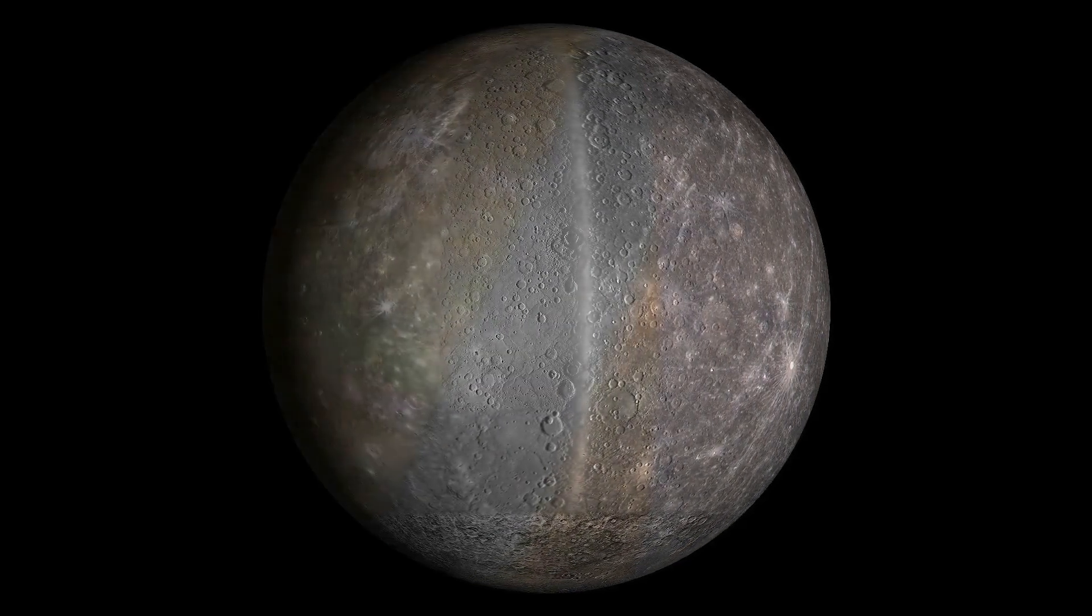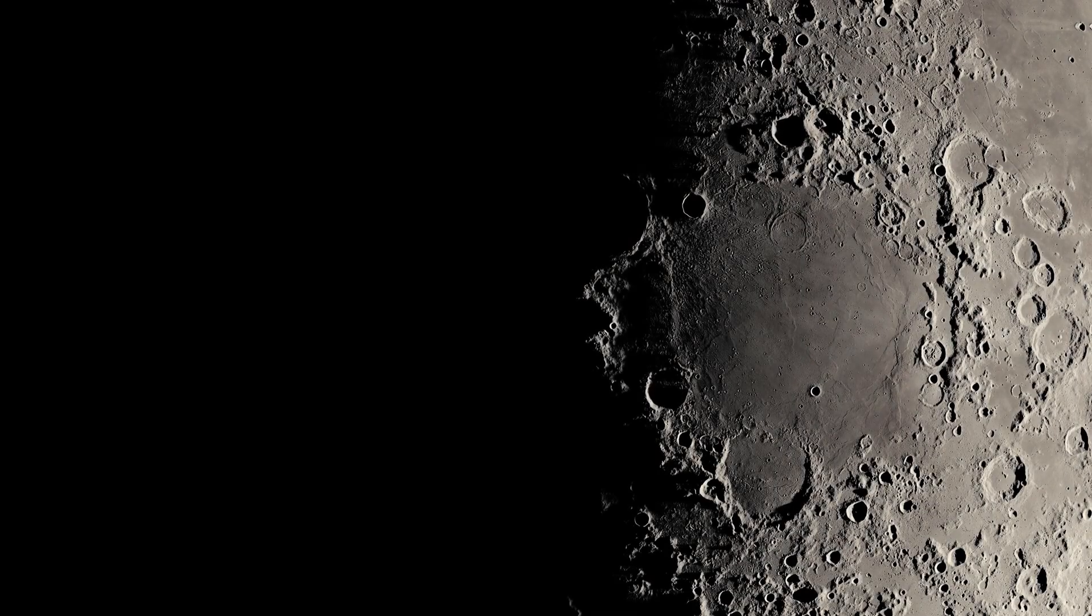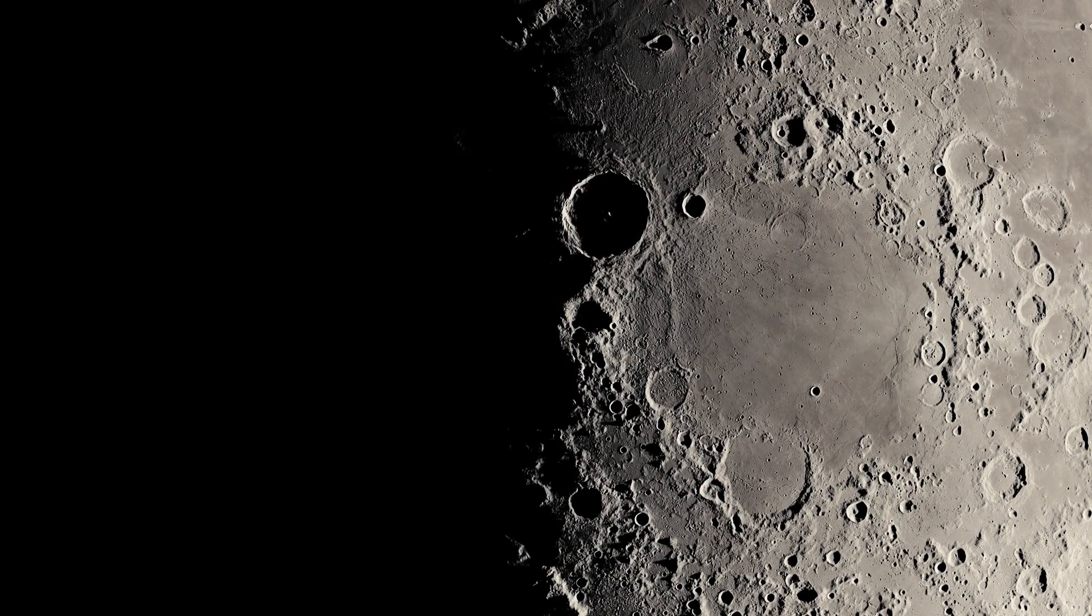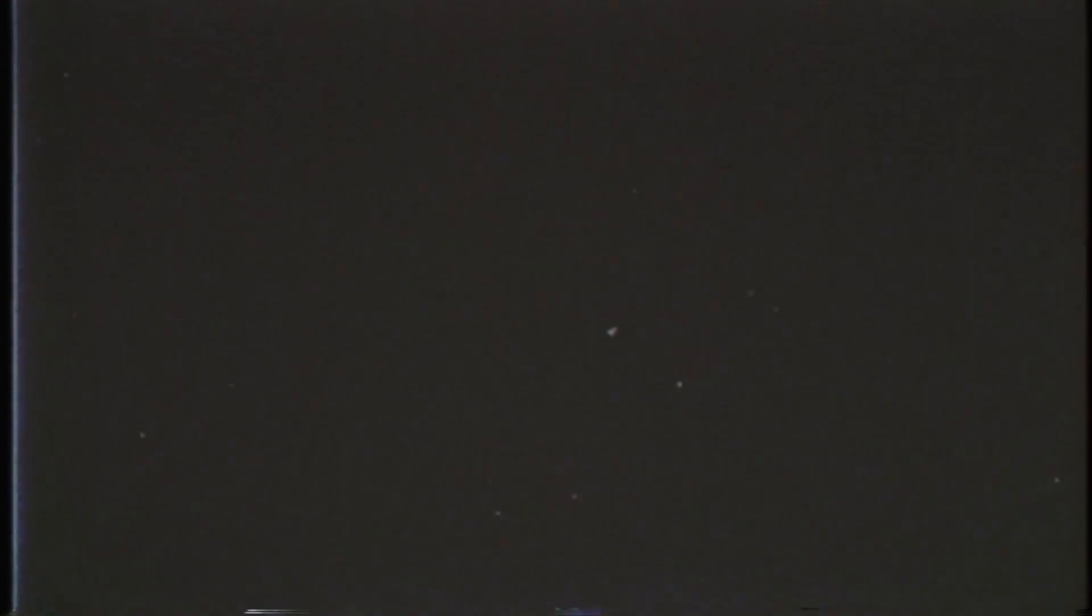After the blackout, private observatories across South Africa and Chile reported erratic readings. Neo-Oumuamua had changed velocity mid-flight without propulsion. It then stabilized in geosynchronous orbit, parked directly above the Earth's magnetic equator, at an altitude where no natural object should exist.